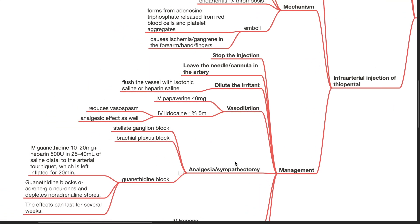Management. Stop the injection. Leave the needle or cannula in the artery. Dilute the irritant by flushing the vessel with isotonic saline or heparin saline. Vessel dilation with IV papaverine 40 mg or IV lidocaine 1% 5 mL. Lidocaine reduces vessel spasm and has analgesic effect as well.